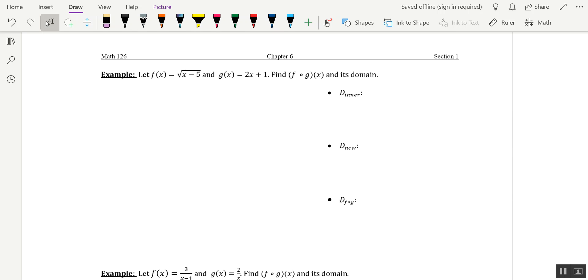It says, let f of x equal the square root of x minus 5, and g of x equal 2x plus 1. We've got two things on the docket here. Number one, we want to figure out the composition function, and then we want to figure out its domain.